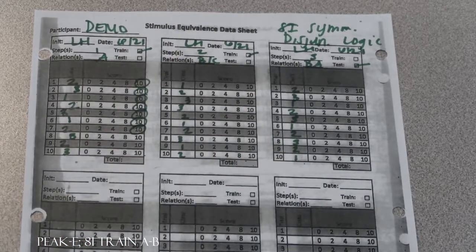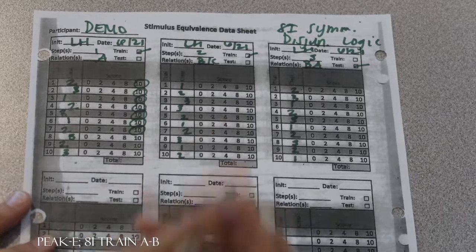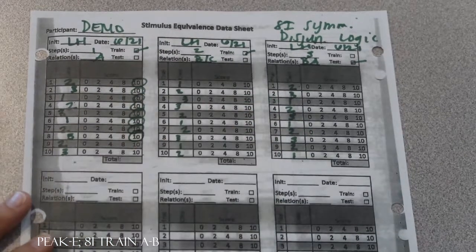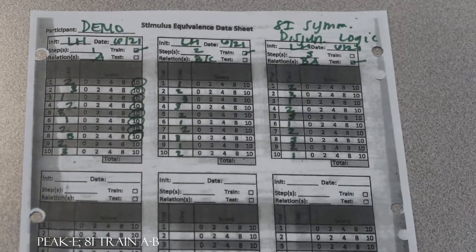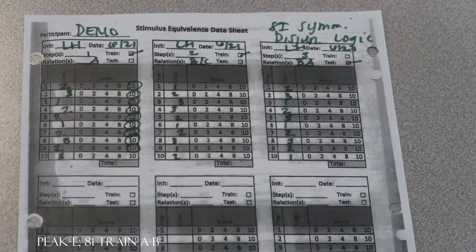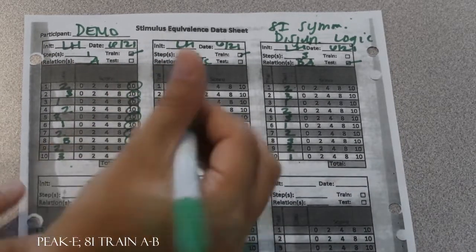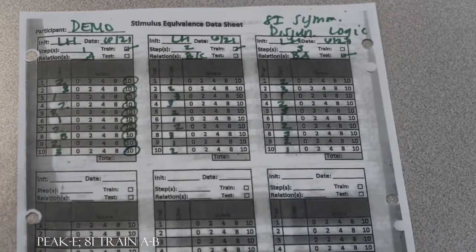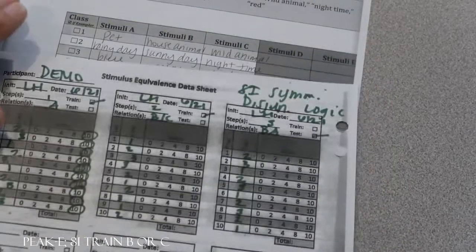Say blue is the same as cyan. Blue is the same as cyan. Say rainy day is the same as sunny day. Rainy day is the same as sunny day. And one more — say blue is the same as cyan. Blue is the same as cyan. That's a good job. All right, let's do another one.